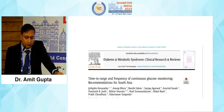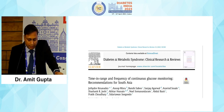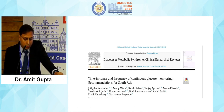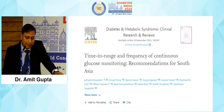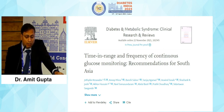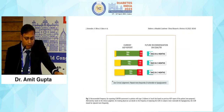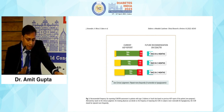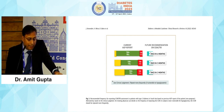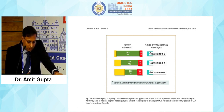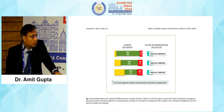A paper on time in range and frequency of continuous glucose monitoring recommendations from South Asia, authored by Dr. Jyotidev Keshwadev, Dr. Anup Mishra, Dr. Bansi Sabu, and others, provides TIR-based CGM frequency recommendations for Southeast Asia for type 2 diabetic patients. The group recommends: AGP at least once in 6 months if TIR is above 90%, once in 3 months if TIR is above 70%, and once in 2 months if TIR is above 50%.